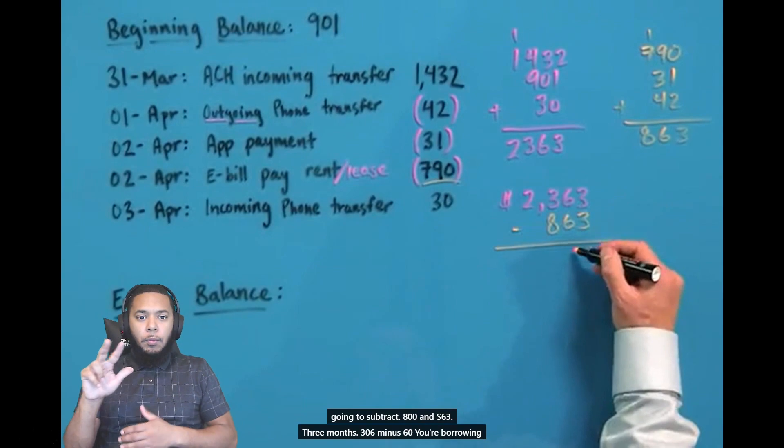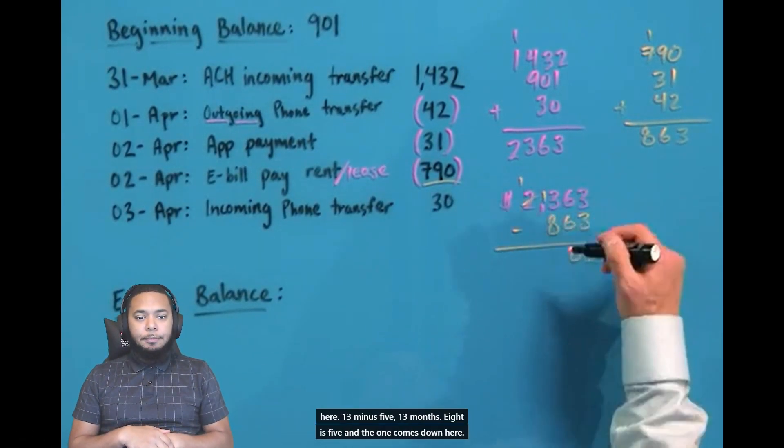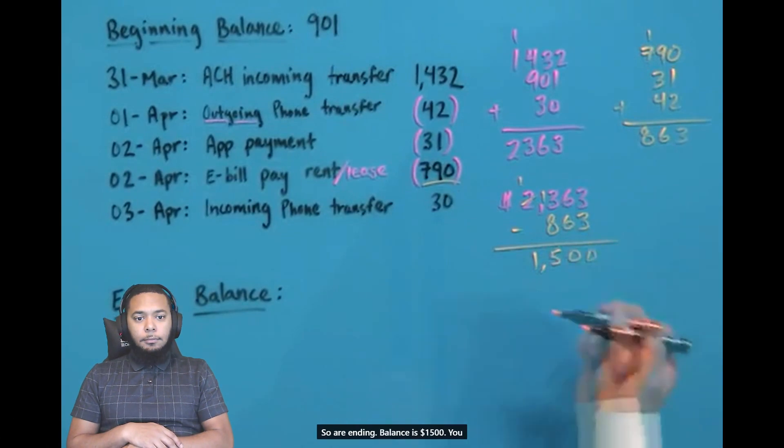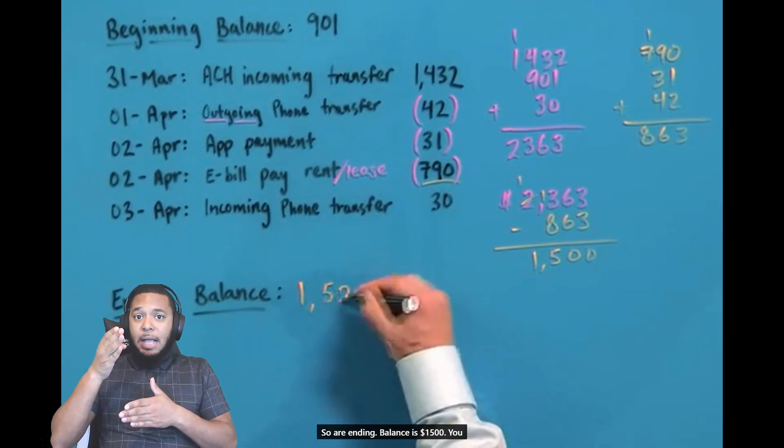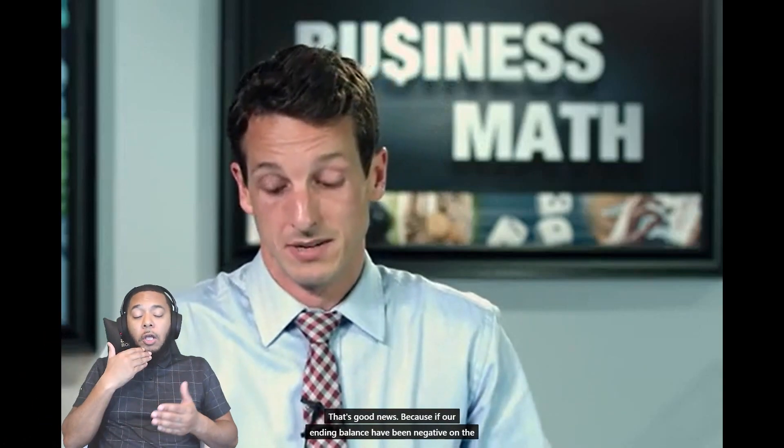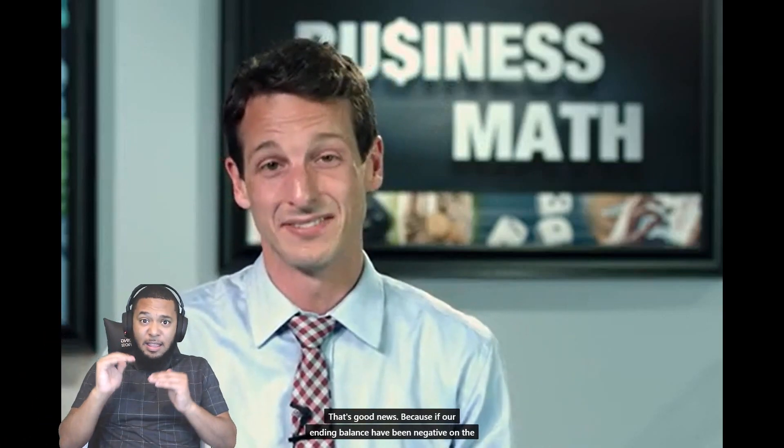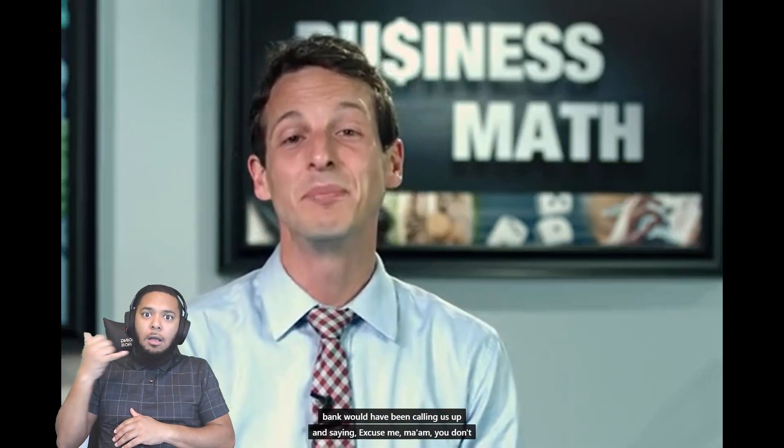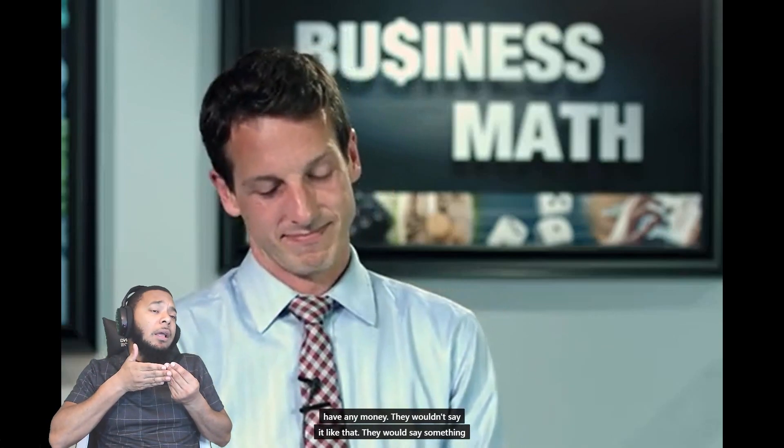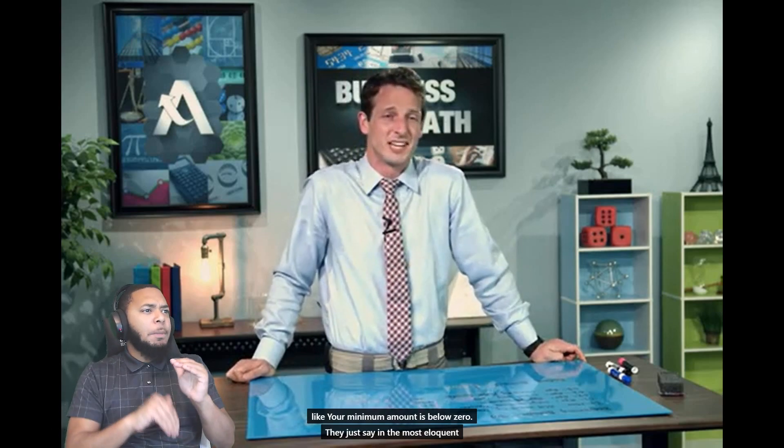3 minus 3 is 0. 6 minus 6 is 0. We need to borrow one here. 13 minus 8 is 5. And the one comes down here. So our ending balance is $1,500. That's good news. Because if our ending balance had been negative, the bank would have been calling us up and saying, excuse me, ma'am or sir, you don't have any money. They wouldn't say it like that. They would say something like, your minimum amount is below zero. They just say it in the most eloquent of ways.